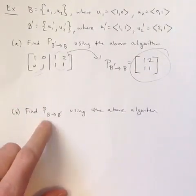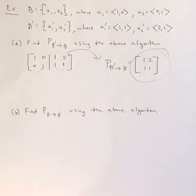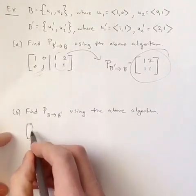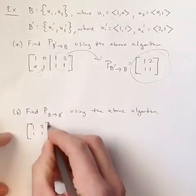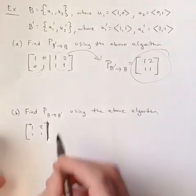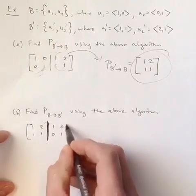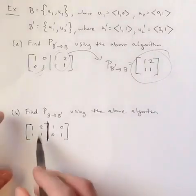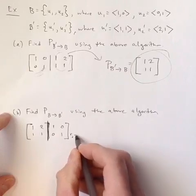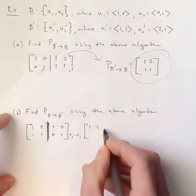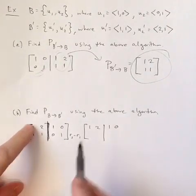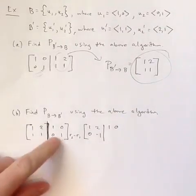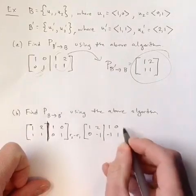Now let's do the other problem because it's not as straightforward. Find the transition matrix that changes the standard basis into basis B prime. So I would put 1,1 and 2,1 on the left side of the augmented matrix, then augment it with the standard basis on the right. I need to apply EROs until I get the identity on the left. The first thing I would do is row 2 minus row 1, leaving the top row alone. When I do row 2 minus row 1: 1 minus 1 is 0, and 1 minus 2 is negative 1. Taking that row and subtracting gives me negative 1, 1 on the right side.